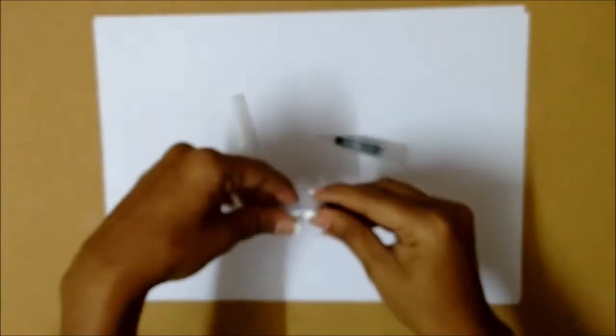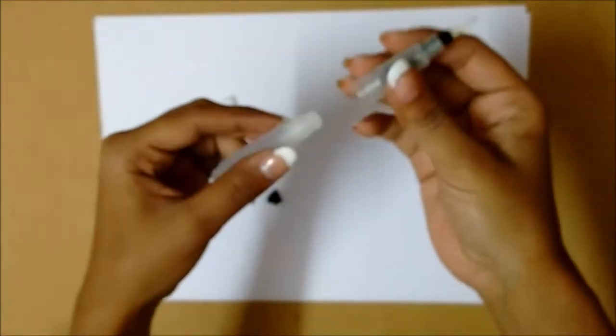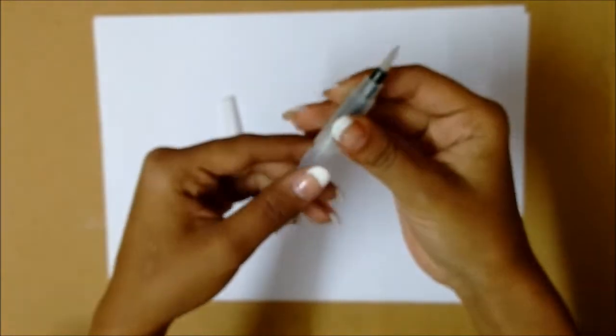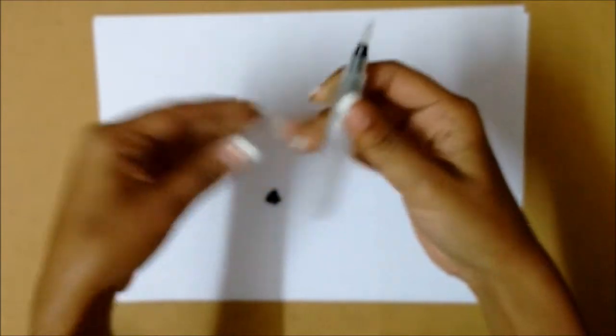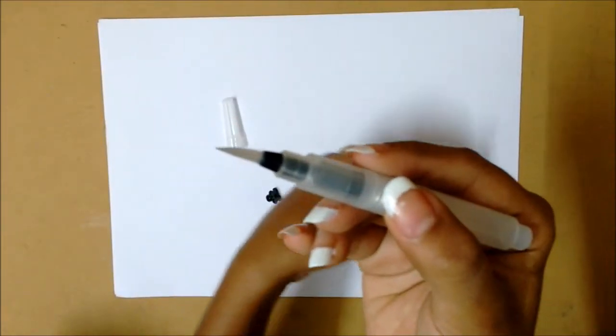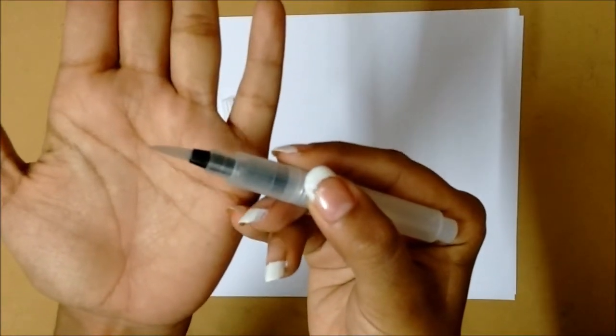So this is how your portable water brush will look. Talking about the brush tip, it is made up of nylon fiber.